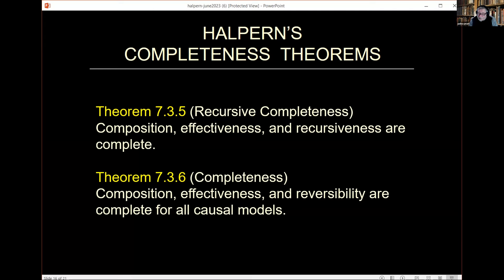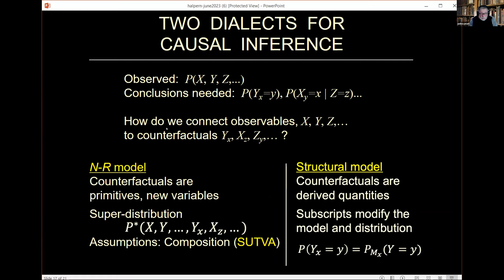Why is it important? It's important because today, if you look at the practice of causal inference, you find that there are two dialects. One is the Neiman-Rubin model. The other one is the structural model that I described to you right now. If I would be asked to count, I would say that 80% of the people working in causal inference are now using the Neiman-Rubin model, and only 20% are using the structural models.